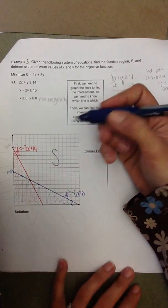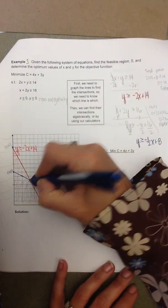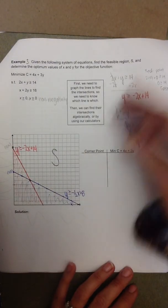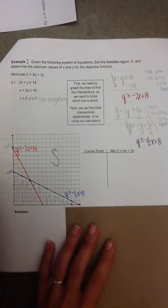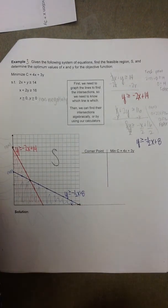But we know that our feasible set S is restricted to the first quadrant. And we need to identify the corner points that define the feasible set S. One, two, three of them. And then to the right here, the line y is greater than or equal to 0 will just continue on.